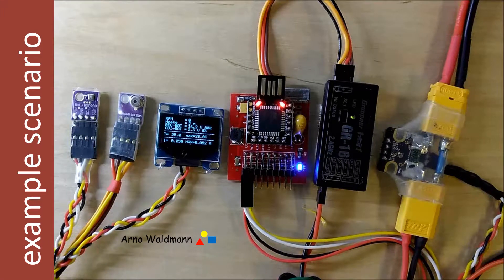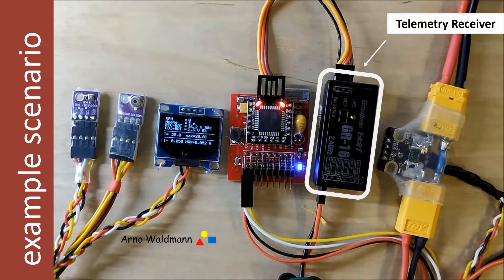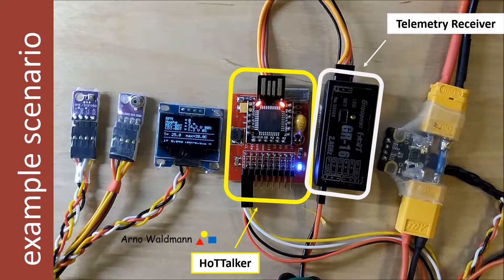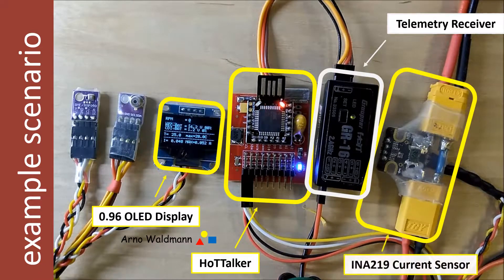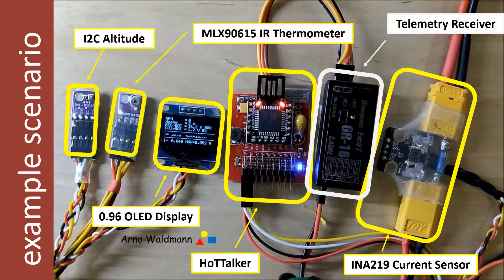Here is an overview of all devices used in a common telemetry scenario. At first, the telemetry receiver sending data to the transmitter, and on the left side of the receiver the Hot Talker itself. Next, the OLED display and three I2C sensors for temperature, altitude, and current.